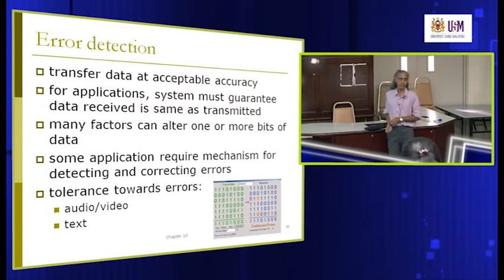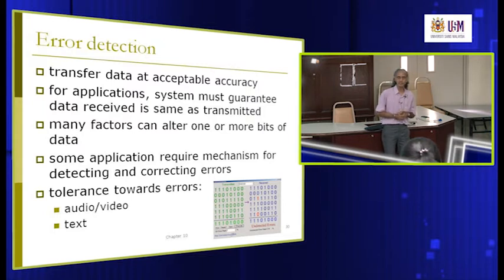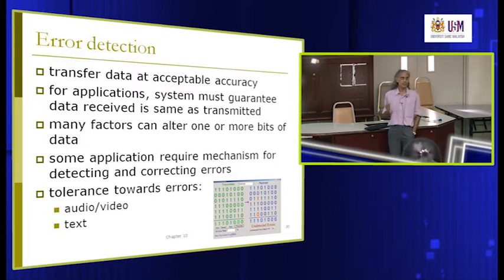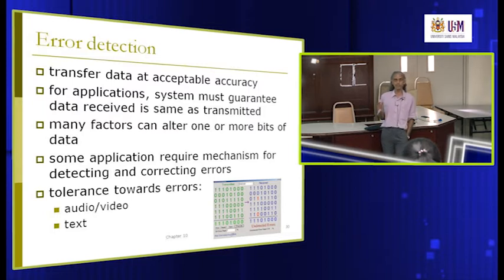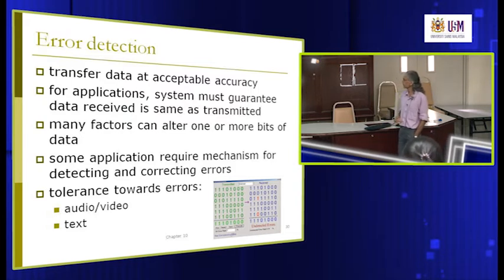For applications, we must make sure that data transmission is correct and accurate — whatever is being sent must be the same as what is being received. That is the job of the application. We do not want to receive wrong data, so the application will have some kind of mechanism for detecting and correcting those errors.